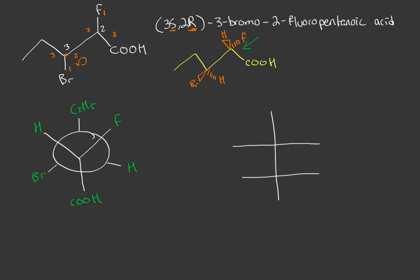If we want to draw the Fischer projection, an easy way is to rotate this carbon to get the carboxyl group going up. We have our groups arranged with the carboxyl group at the top — it's the same molecule, four carbons and then the fifth carbon with the carboxyl. The bromine is still pointing out towards us and the hydrogen is back. Since we rotated this carbon, the hydrogen goes from in front of us to behind the screen, and the fluorine ends up pointing out towards us.